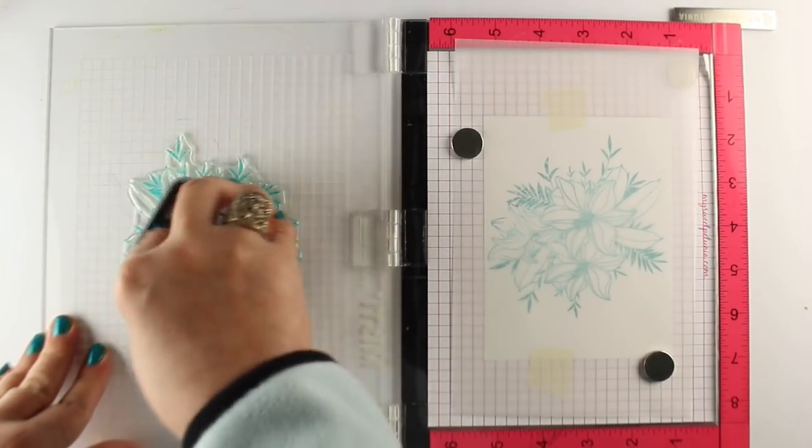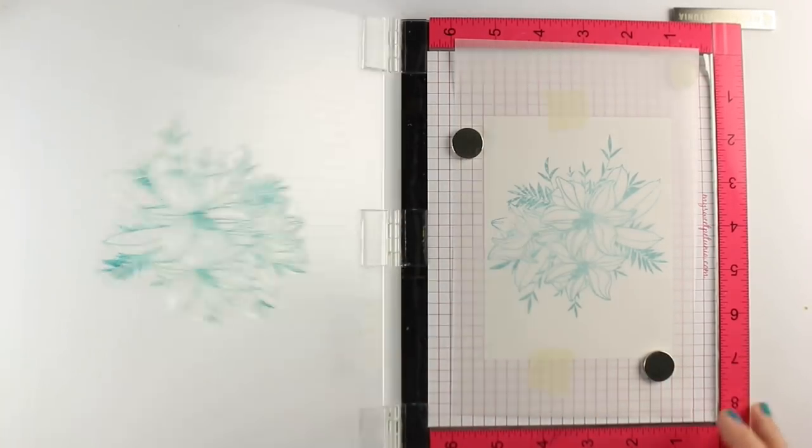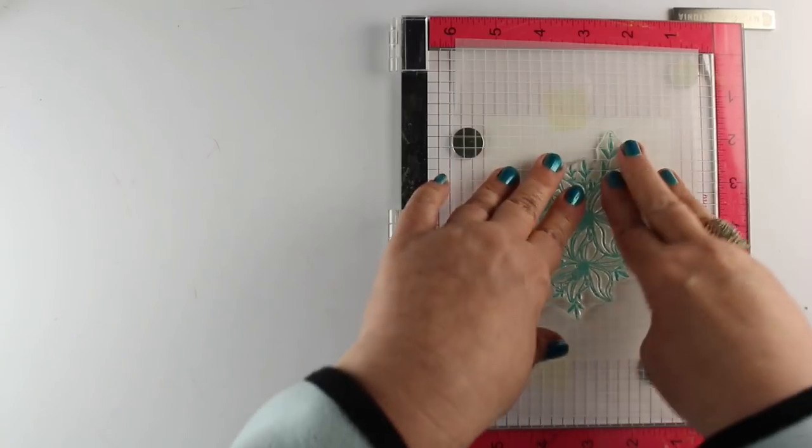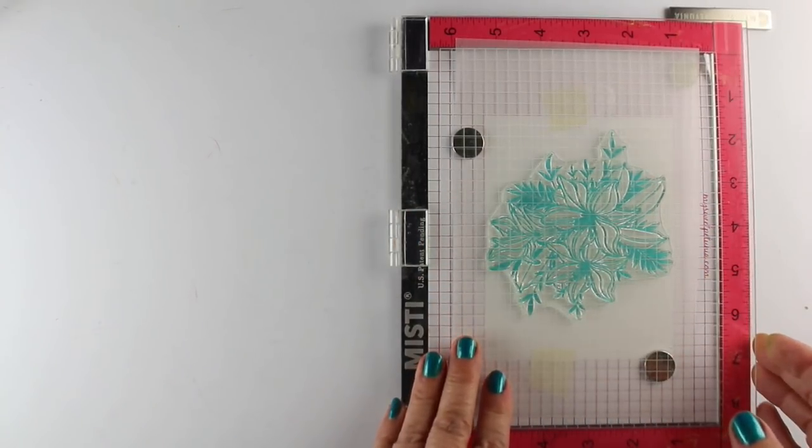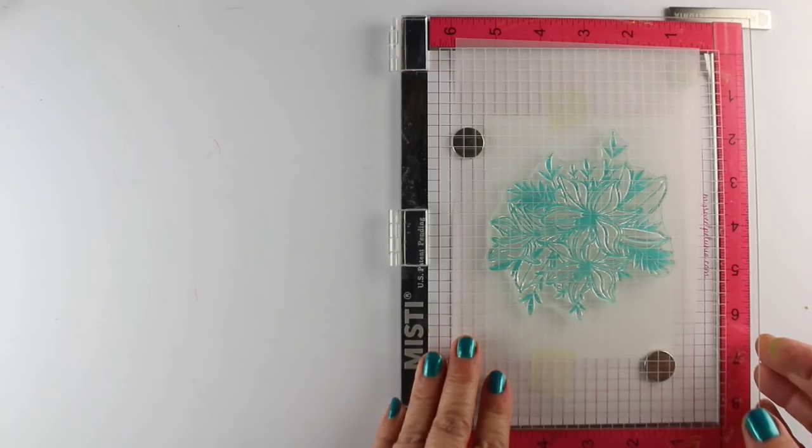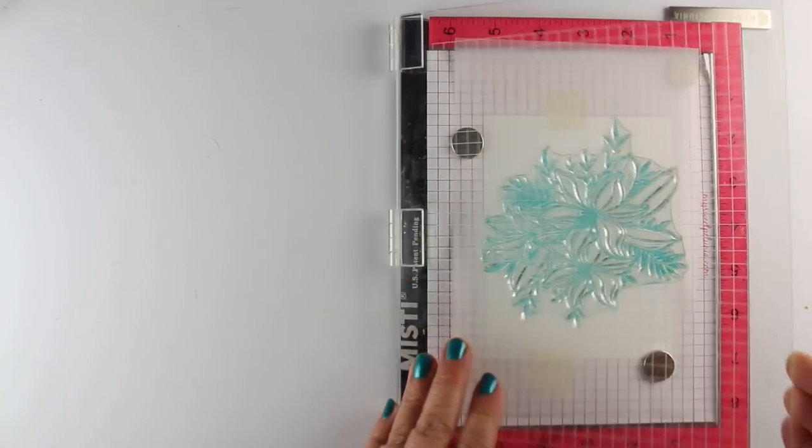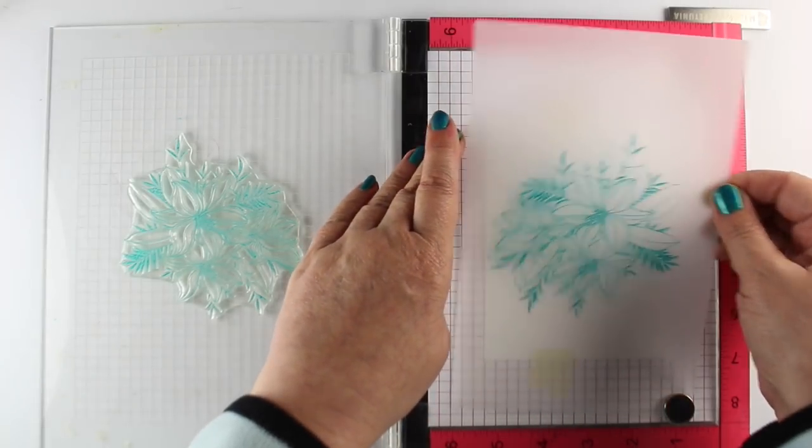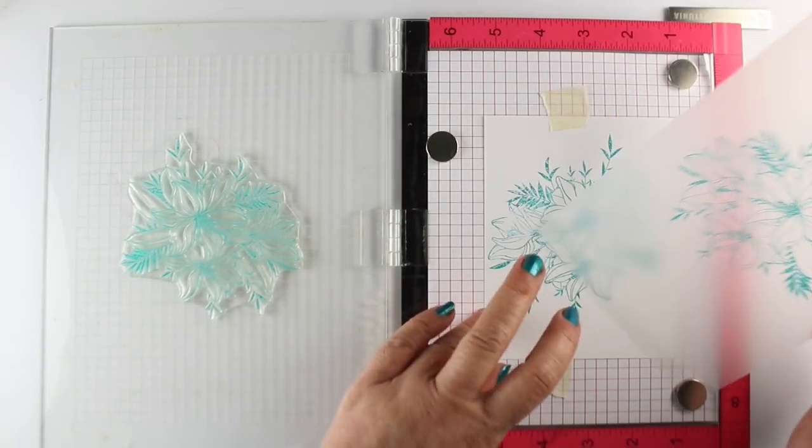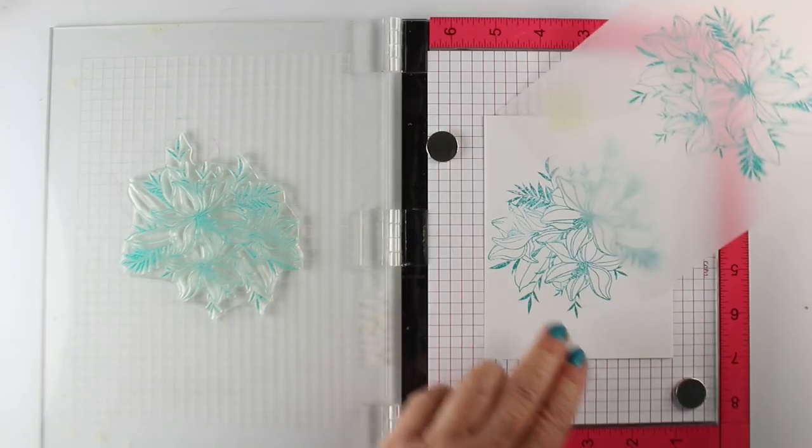I'm using Distress Oxide ink, and this is the Peacock Feathers. After doing this, I probably would recommend something that's going to dry faster than this, because you'll see as I go, there's a little bit of issues with it, kind of making a little bit of a mess. But it came out still good enough in the area that the card's going to be, that I used it anyway.